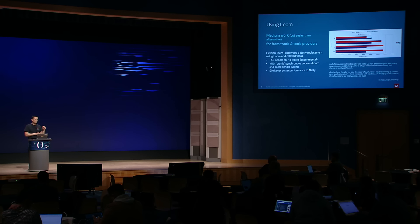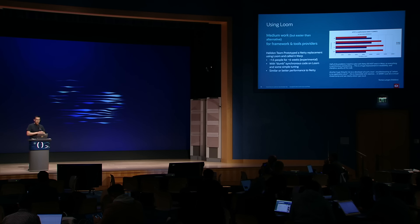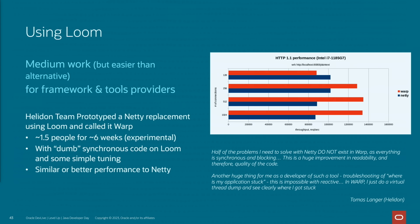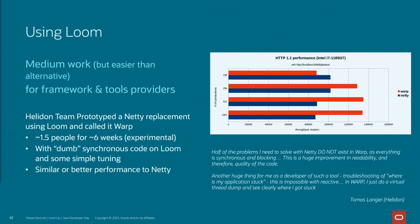As part of the work to test Loom, a small group from the Helidon team — one person full-time and one person half-time — collaborated to create a prototype replacement for Netty called Warp. Netty is used for high-performance protocol servers and clients. Netty doesn't use a simple one-thread-one-request model, but has its own APIs to multiplex those requests. Netty has been around since 2004 and is actively maintained, with about 18 years' worth of hard work and optimizations. Using Loom and simple synchronous code with a little tuning, the Helidon team was able to get similar performance in just six weeks.